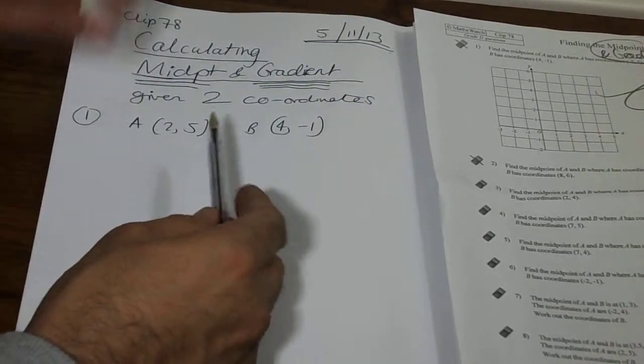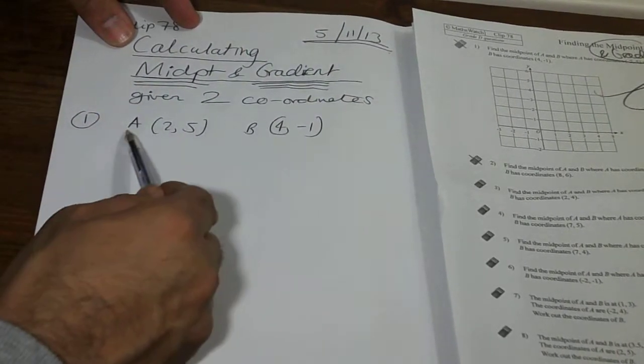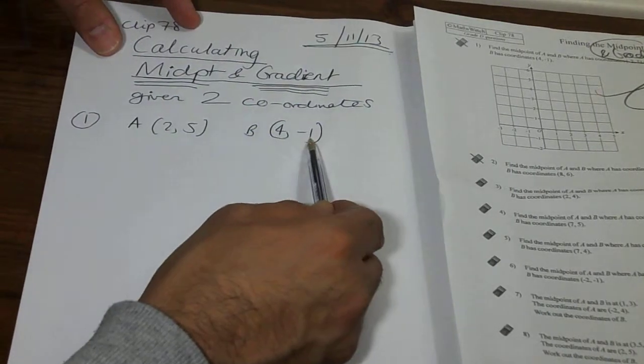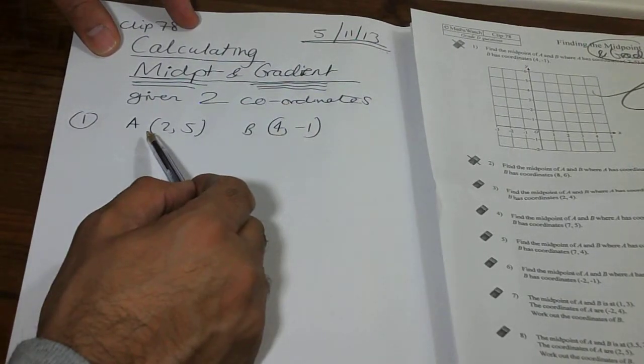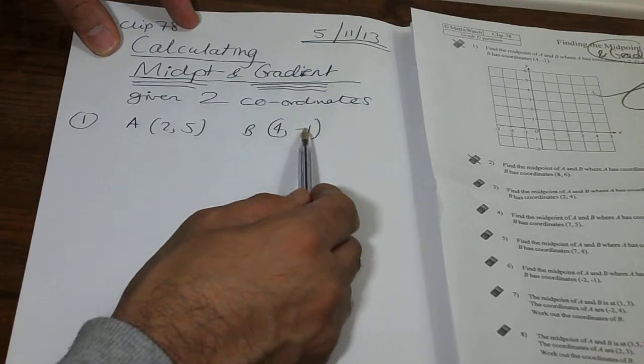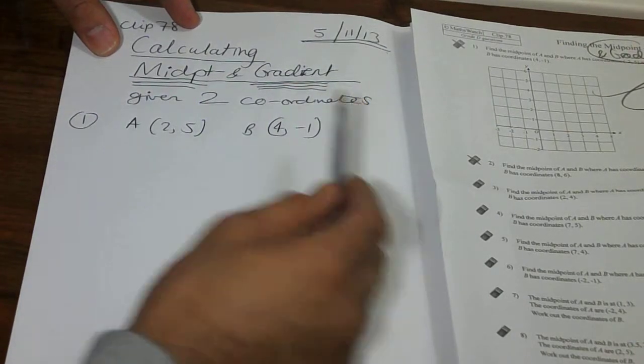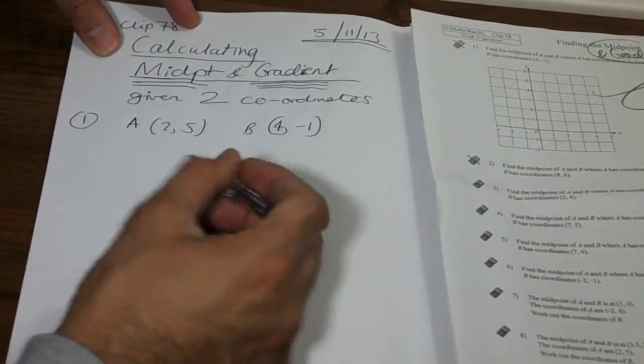So these kind of questions start off with two coordinates. First coordinate A for example, second one is called B. Now we need to know how to work out the midpoint of these two coordinates. We don't need to draw them and draw a line and try to work it out. So this is the technique that we're going to do.